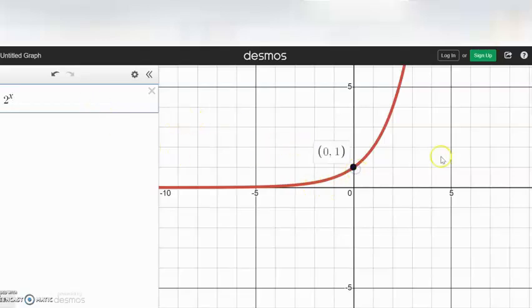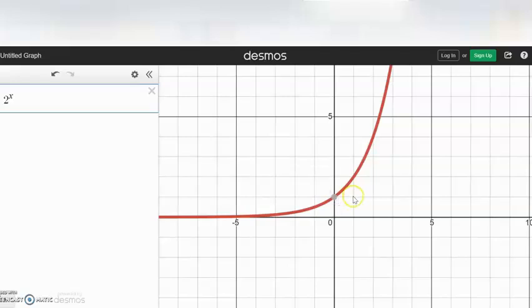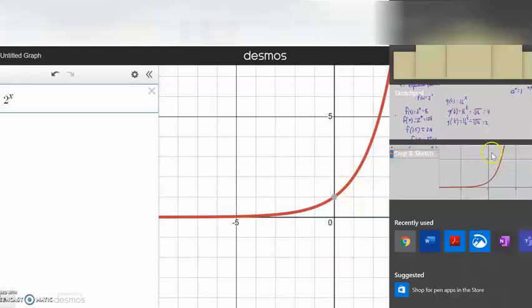Notice it goes through the point 0, 1, and it's increasing. Every time x goes over by 1, this height doubles. Let me share what I mean by that.